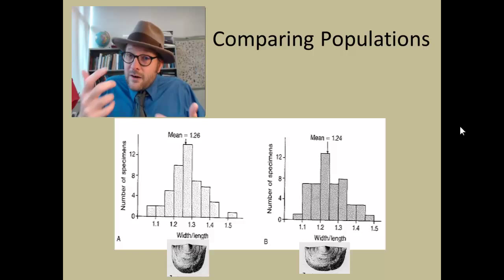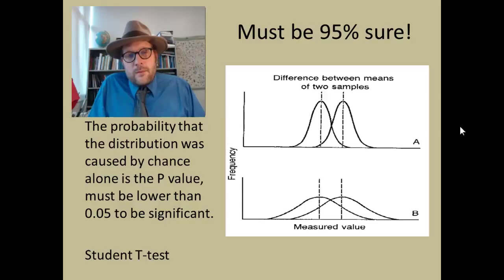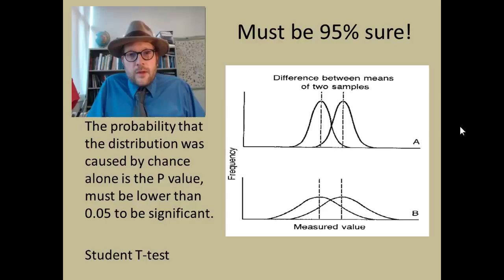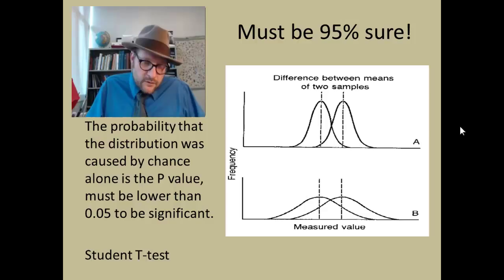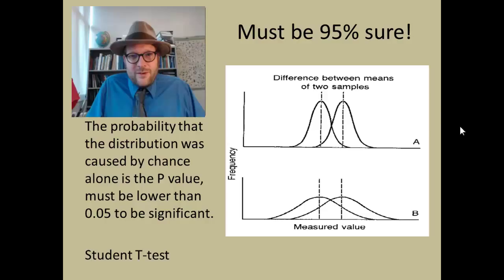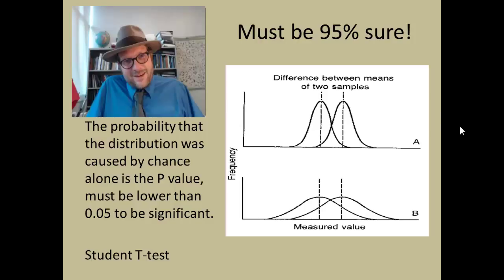Now I'm going to introduce some statistical tools used in paleontology when working with a population of fossils and taking lots of measurements. One of the rules is that you must be about 95% sure that the differences between two means are meaningful. The probability that your distribution was caused by chance is what's referred to as the p-value, and that p-value must be lower than 0.05 to be considered significant. Most of the time analyses are either way very significant or not significant at all.